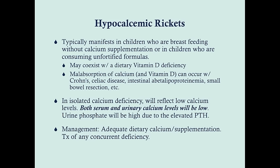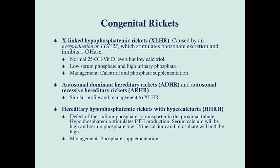In isolated calcium deficiency, you'll see low serum calcium and low urinary calcium — the body tries to preserve calcium. Urine phosphate will be high due to elevated PTH. This can look somewhat similar to CKD, but these children have normal renal function — confirmed by a normal creatinine. Management includes adequate calcium supplementation, and if there is malabsorption, also give vitamin D based on labs — supplement if levels are low, skip if normal.